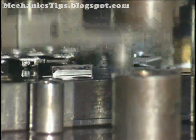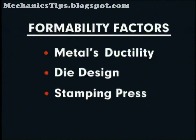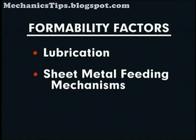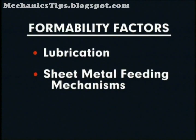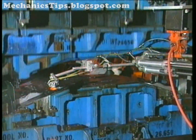Other factors also influence formability. Those include the ductility of the metal, the die design, the stamping press, press speed, lubrication, the sheet metal feeding mechanisms, and monitoring systems and controls which safeguard and synchronize the operation. Because of these various factors, formability differs from one part or operation to the next.